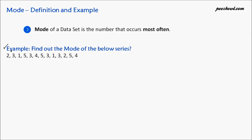This is our first example. These are the numbers in one particular data set and we need to find out what is the mode of this particular data set. Let us arrange all these numbers in ascending order — the lowest value number will come first and the highest value number will come last.